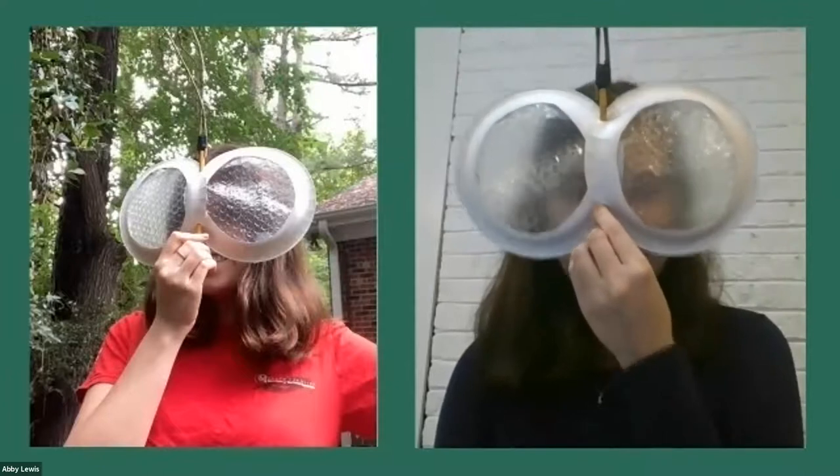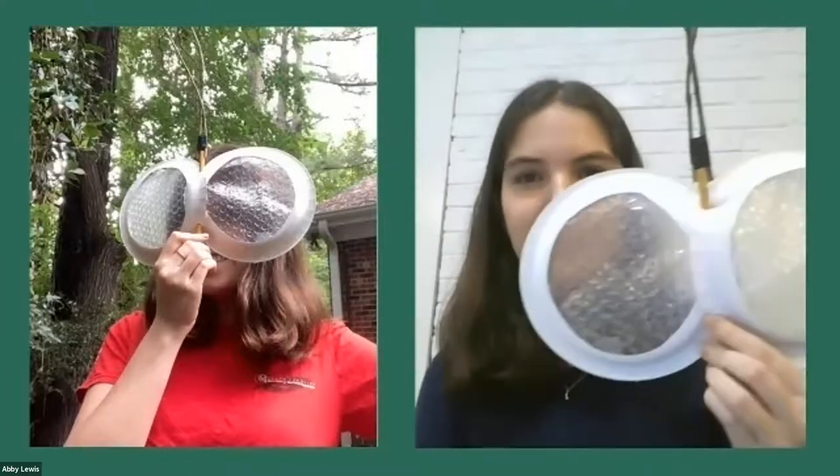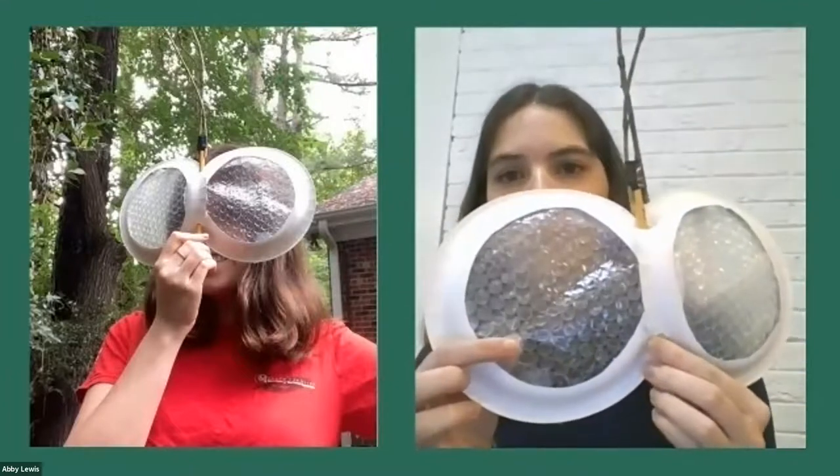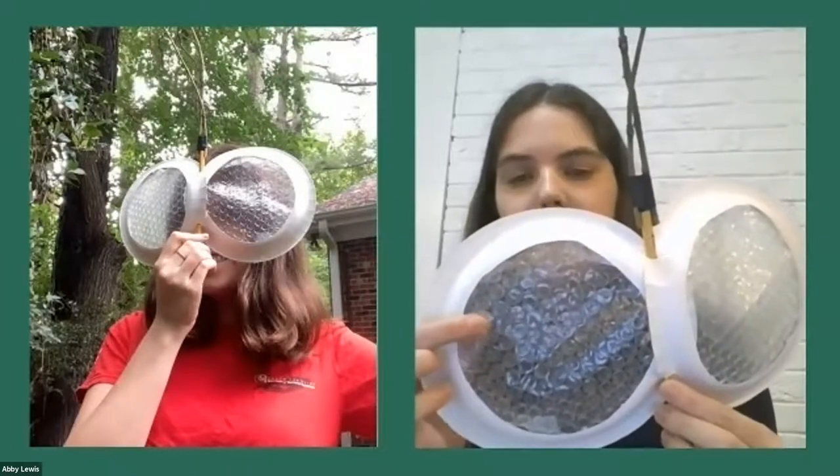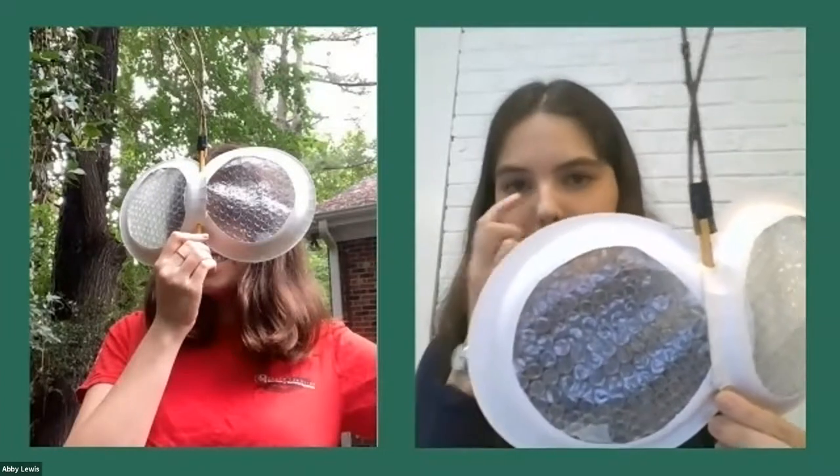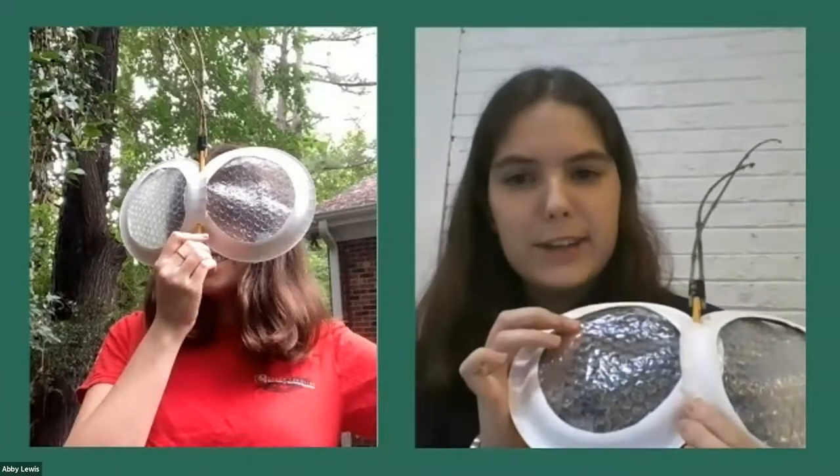So today for our craft we're going to be making our own pair of fly eyes. Here you can see two of me holding what we're going to make today. These little bubble wrap eyes that kind of look like the compound eye of a fly. Each little bubble is like a little lens, but you can count when you do it yourself, I don't quite think there's four thousand and that's okay. We're just pretending.